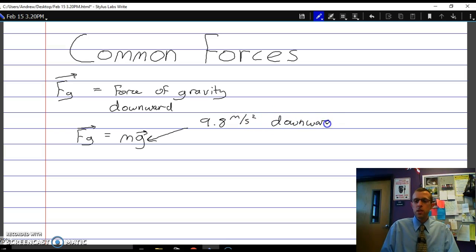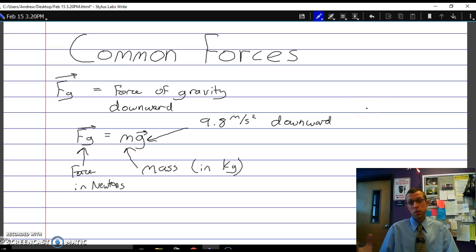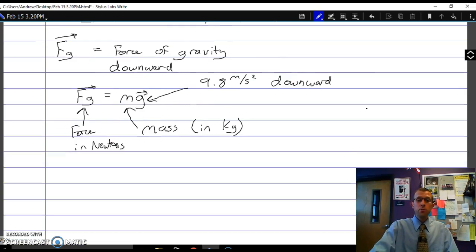And so if we know the mass of an object, and that needs to be in kilograms, if we know the mass of an object, we can simply multiply that mass by 9.8 meters per second squared to get the magnitude for that force, and that'll be in newtons. And the direction on that is always going to be downward. So a number of problems you might look at at the very beginning and think, I don't know how much force is acting on this thing, but then you see they give us a mass, so actually I can figure out something about that downward force.